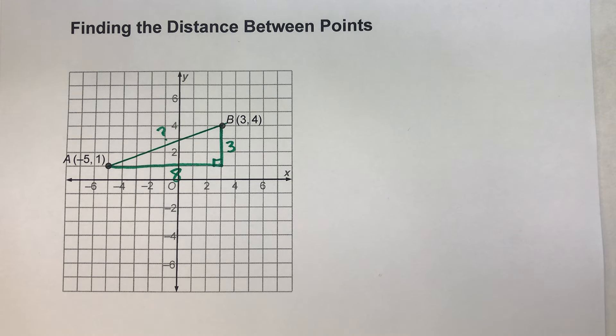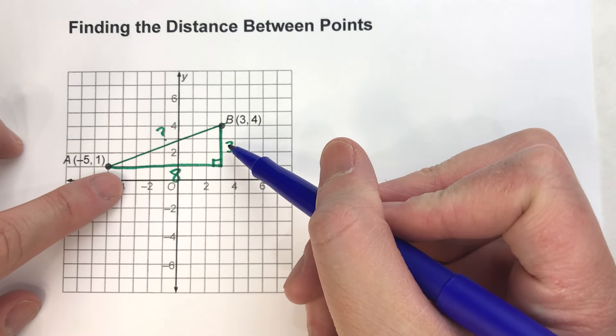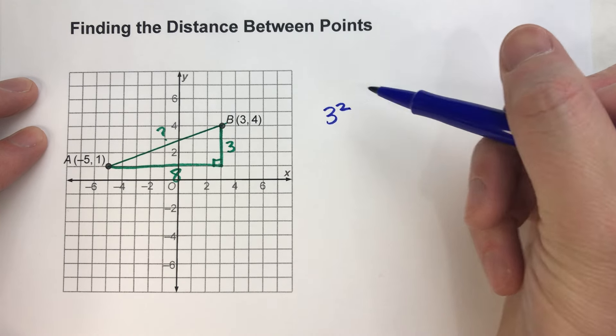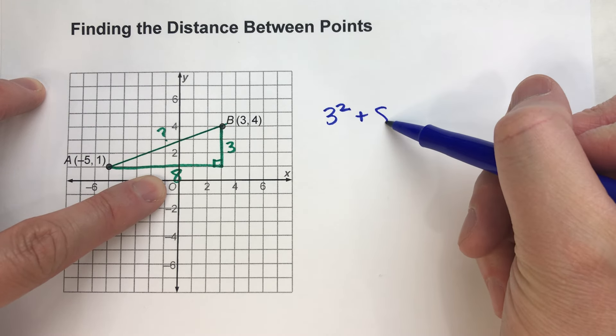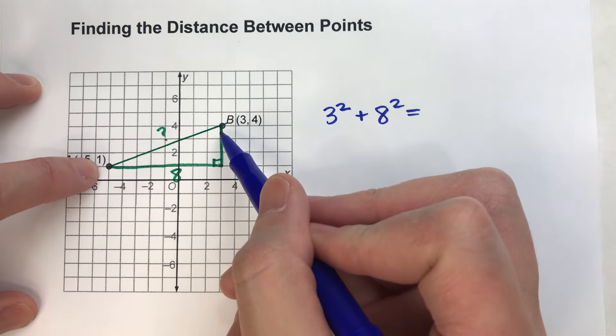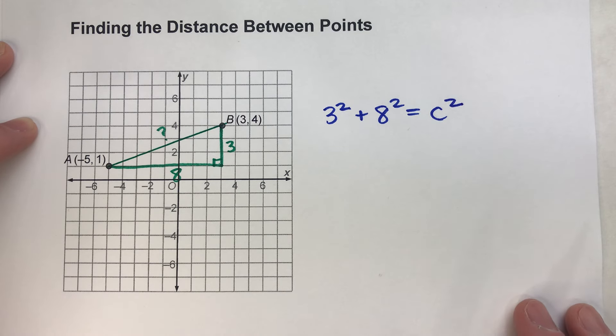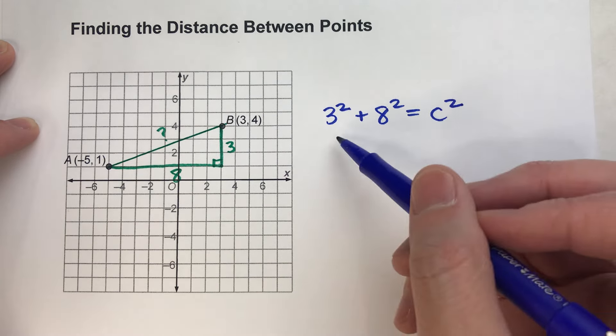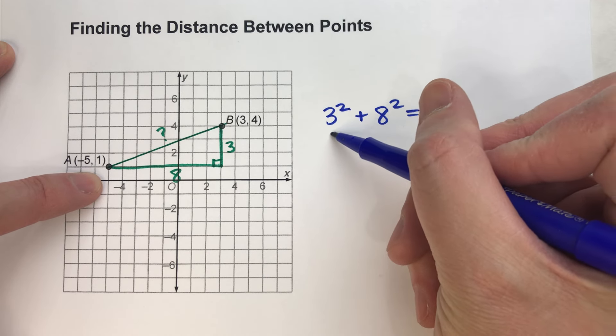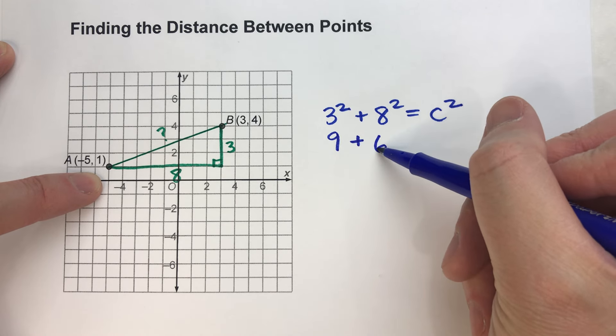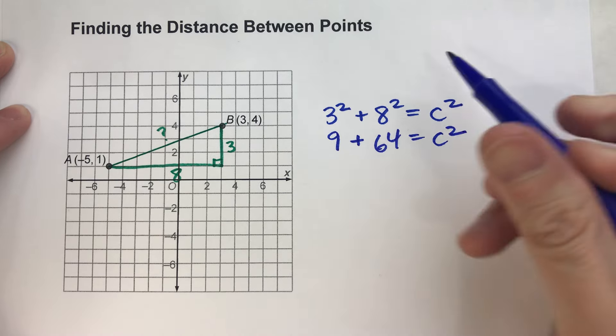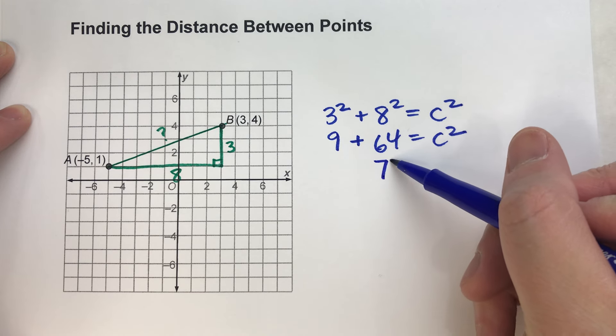I'm just going to use the Pythagorean theorem, which says that A squared plus B squared equals C squared, the hypotenuse, which I do not know. So if I solve this, I can find that distance. 3 squared is 9, 8 squared is 64.